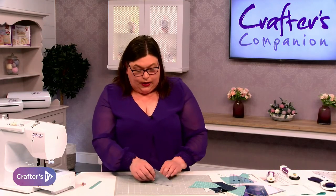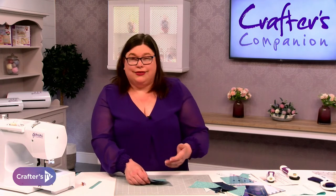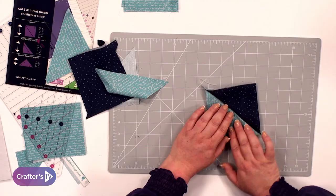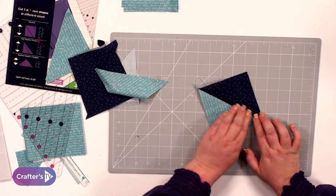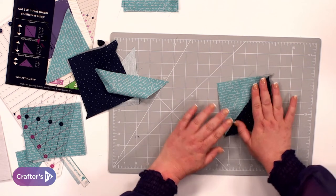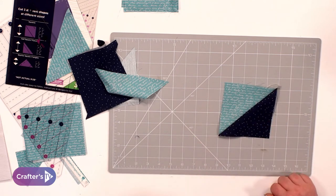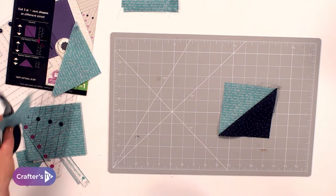But I'm just going to finger press on this one just so you can see that we've got there our half square triangles. There we go. So they're the half square triangles.